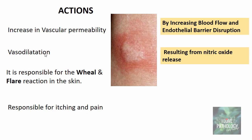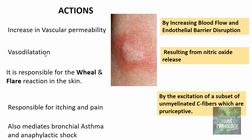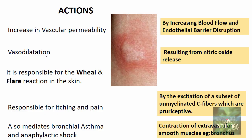Another important action of histamine is that it is responsible for itching and pain. This happens because there is excitation of a subset of unmyelinated C fibers, which are pro-nociceptive and result in pruritus or itching. Histamine also mediates bronchial asthma and anaphylactic shock. The mediation of bronchial asthma is basically by contraction of extravascular smooth muscles — for example, the bronchus. So smooth muscle of vascular tissue responds to histamine by relaxation, whereas smooth muscle of extravascular tissue responds by contraction. This illustrates that the same histamine has different actions on different targets, which is the diverse action of chemical mediators.